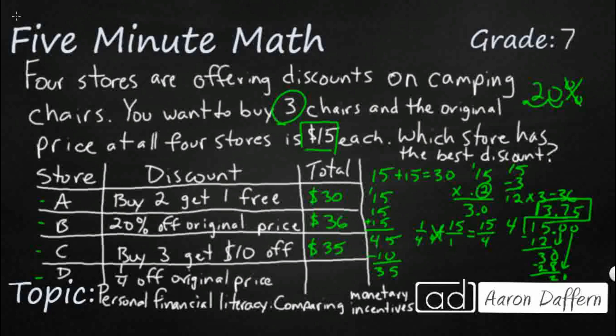So now I need to take my 15 dollars, subtract my 3.75 discount. And that is going to be 11.25. Let's multiply that by 3 because remember I need 3 of them. 33.75. My answer is still going to be A.